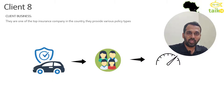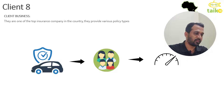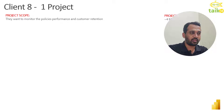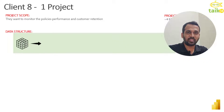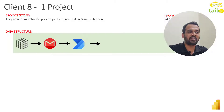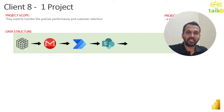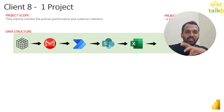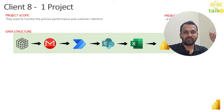They have different policies and want to monitor them. The data structure works like this: they have their own custom application, and from that we get an extract on a regular basis via email as a CSV file. That CSV file is used in Power Automate to store it into SharePoint, and through SharePoint, whenever the file gets stored, we load the CSV into Power BI dataflows.